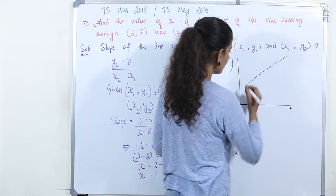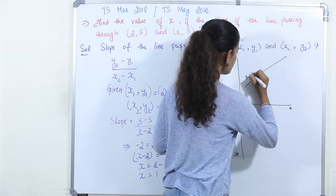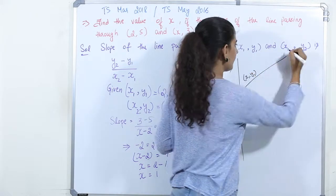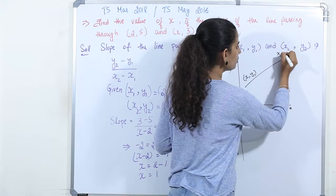So there is a line like this. This will be (x1, y1) and this will be (x2, y2).